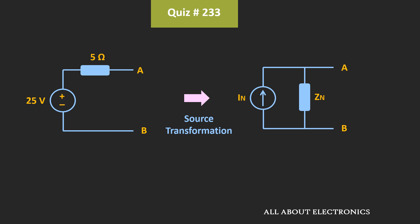So in the Norton's equivalent circuit, Zn is equal to Zth, while this Norton's equivalent current can be given as Vth divided by Zth. So in this case, it will be equal to 25V divided by 5Ω. That is equal to 5A.